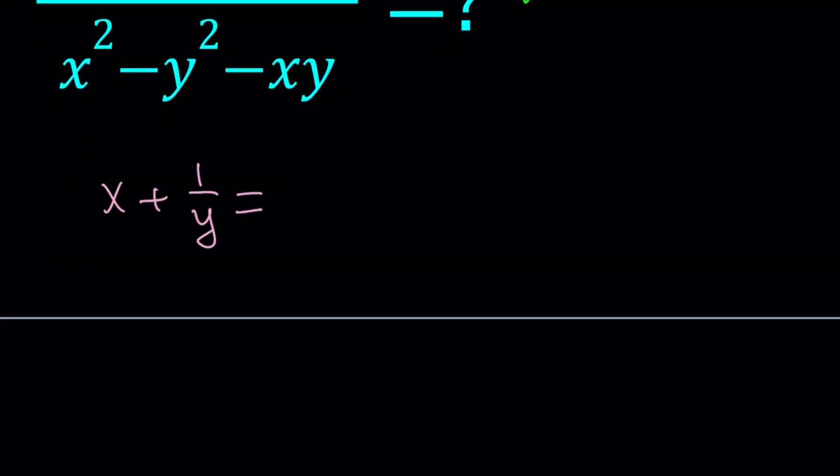So we have x plus 1 over y equals 3 times y plus 1 over x. Needless to say here, x and y cannot be 0 because that will make the expressions undefined. So x does not equal 0, y does not equal 0. And their product should probably not be equal to 0 because if they're not 0, their product won't be 0 either.